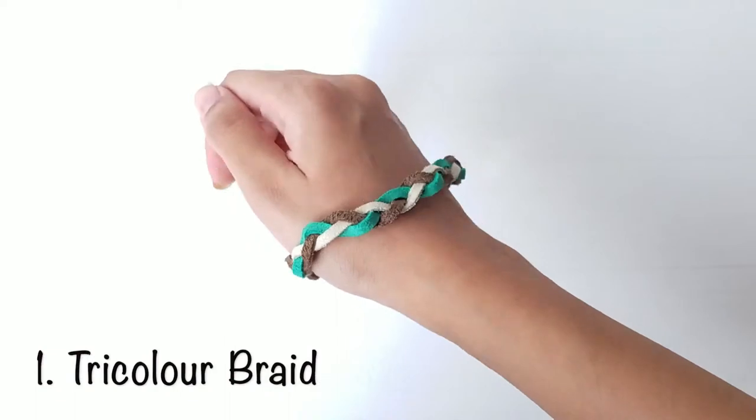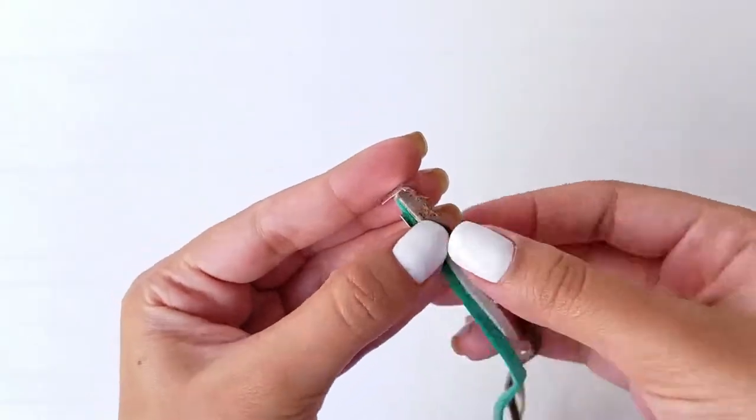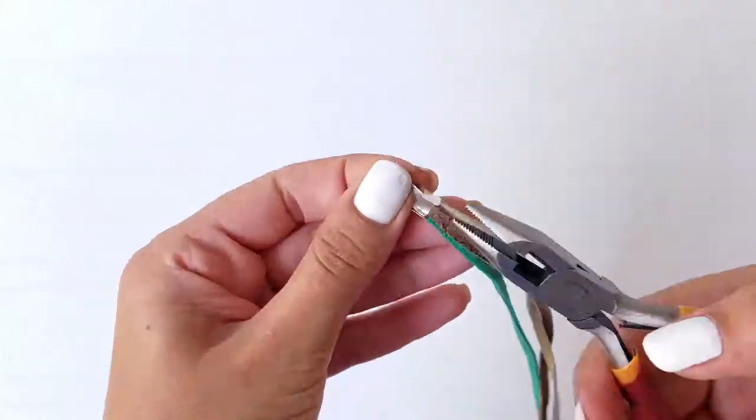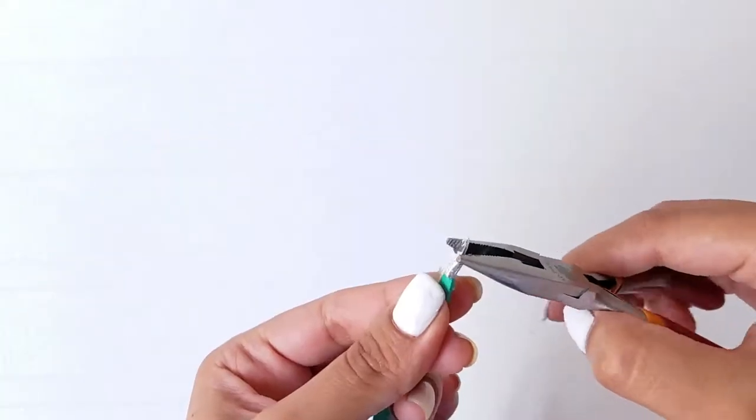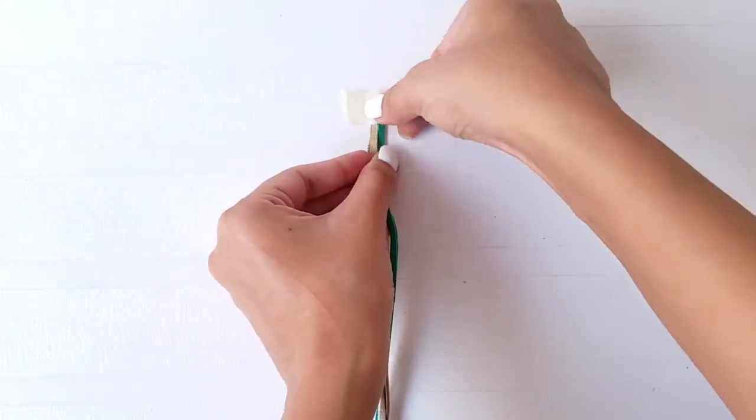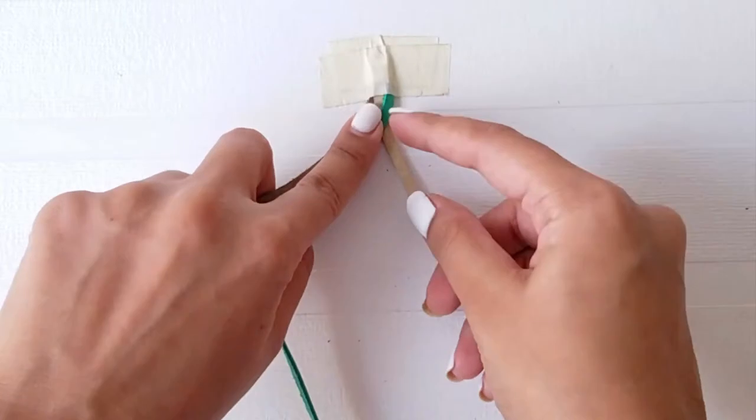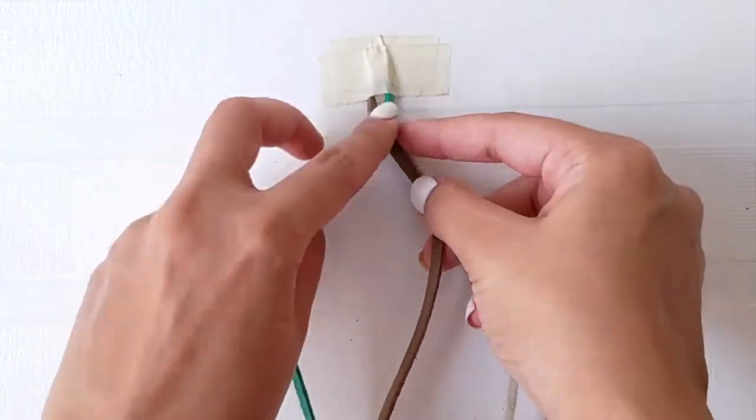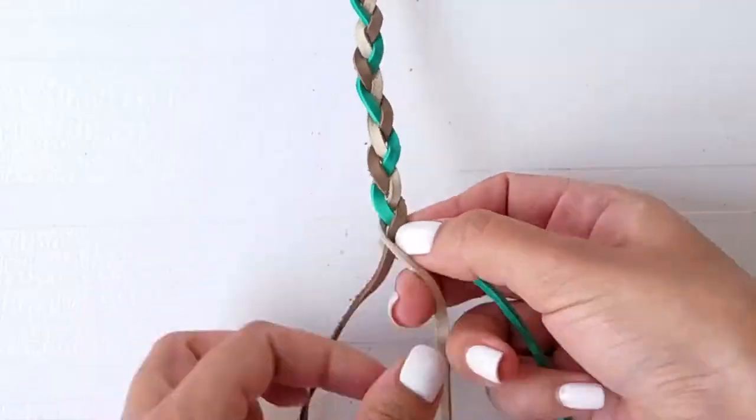In order to make this simple braided bracelet, take three pieces of suede cord and attach it to a jewelry clamp. Tape it to a flat surface so that it does not move. Take the cord on the right and put it over the middle one, and repeat the same from the left side. Repeat these steps till you reach the desired length and cut the cords.